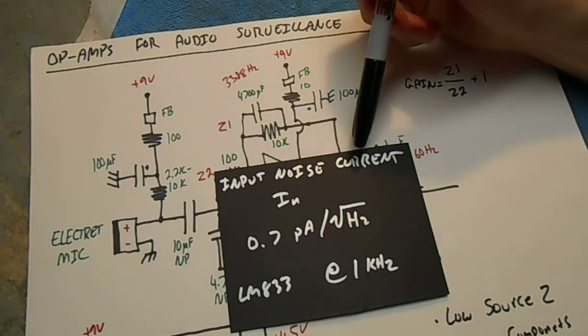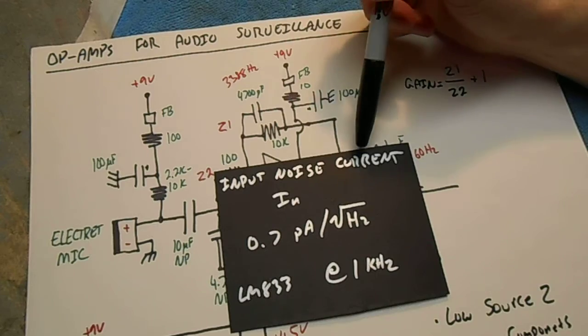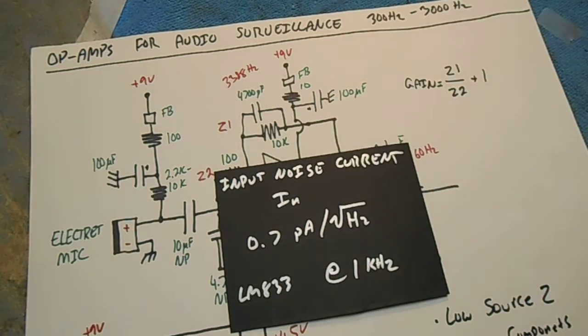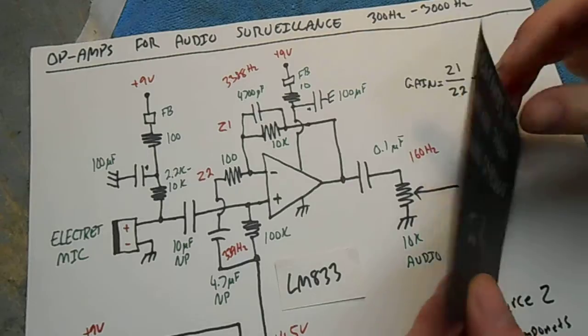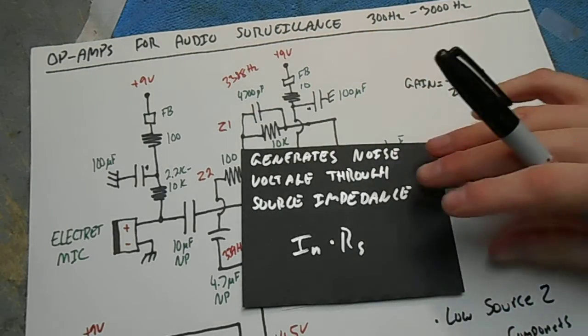The input noise current only generates a noise voltage when it passes through an impedance or resistance. So we often refer to that as the I sub N times R sub S noise.